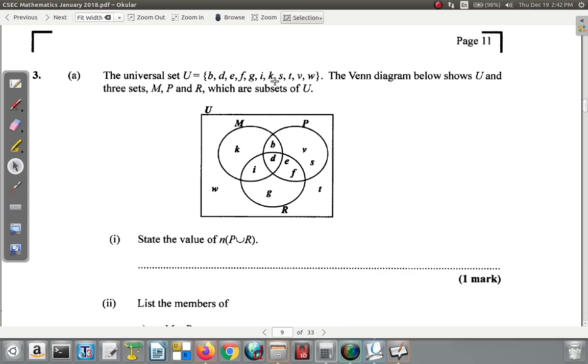Remember, the universal set is the set that contains everything. The Venn diagram below shows U as a rectangle with everything in it, and three sets: set M (this circle), set P (this circle), and set R (this circle).